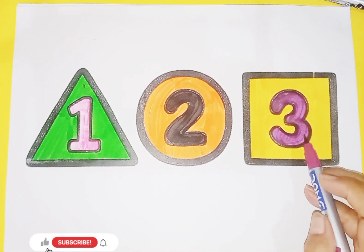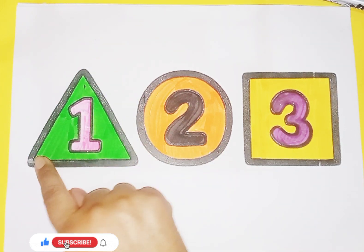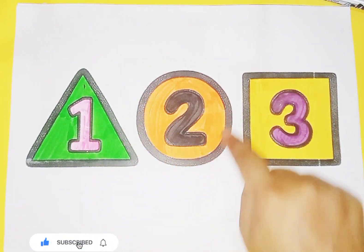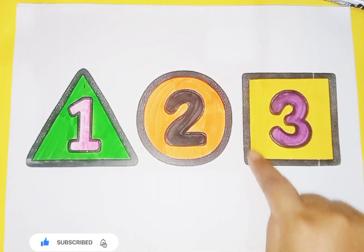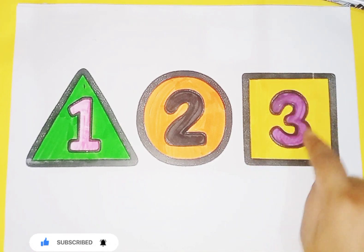So kids, today we learn shapes and number. Shape triangle, number 1. Circle, number 2. Square, number 3.